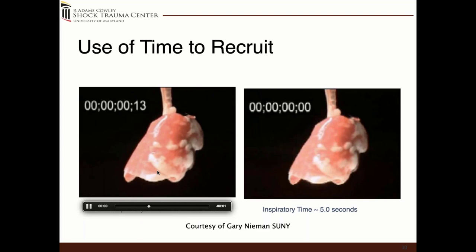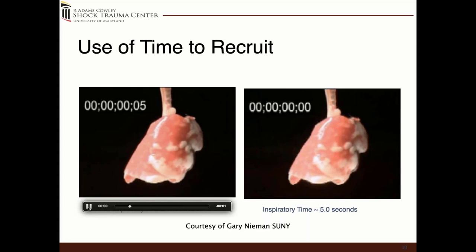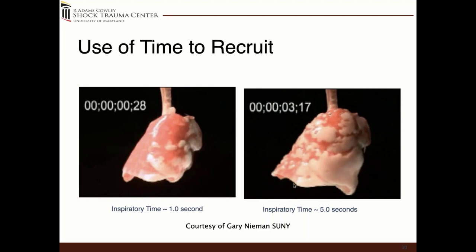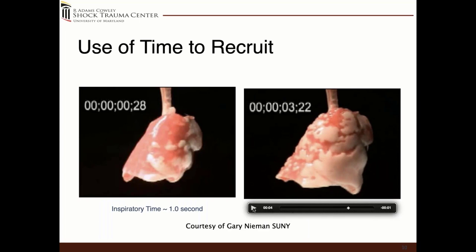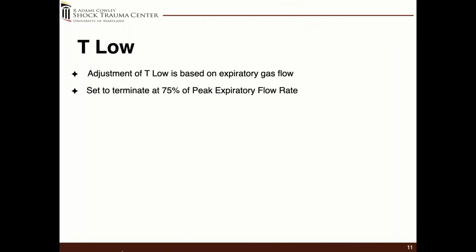We use time to aid in recruitment. Looking at a rat lung loop: after one second of inflation, that's about all you get. But with a T high of five seconds, you get a lot more recruitment — it takes at least two and a half seconds to start opening the lung. So we allow time to help recruit on the CPAP side.